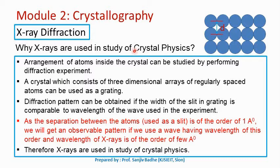Why are we performing the X-ray diffraction experiment? The results of this experiment can be analyzed to find out d — the interplanar spacing, which is the distance between the centers of the atoms. This interplanar spacing can be found out by analyzing the diffraction pattern. We can find out the interplanar spacing in different directions by changing the orientation of the crystal used as the diffraction grating. By finding out the interplanar spacing in different directions, we can find out the crystal structure — the arrangement of atoms inside the crystal. X-rays are selected because the width of the slit is comparable to the wavelength of X-rays.